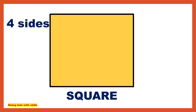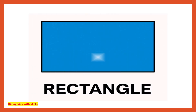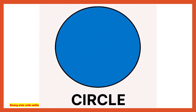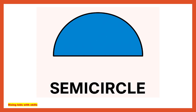This is called a rectangle, a shape with four sides and four corners where opposite sides are equal. This is called a circle, a perfectly round shape with no corners or edges.